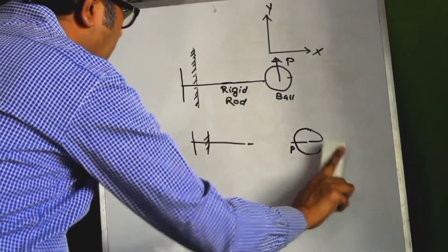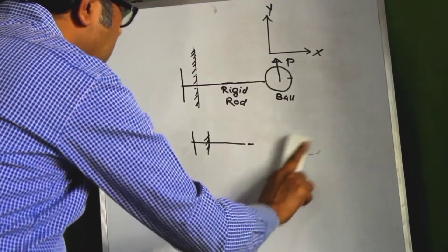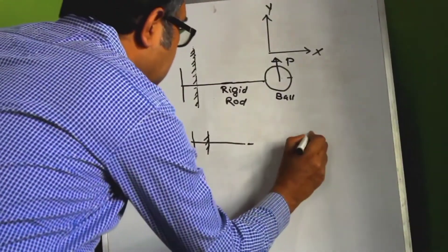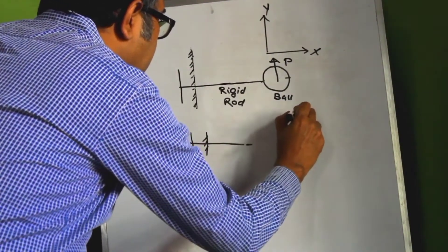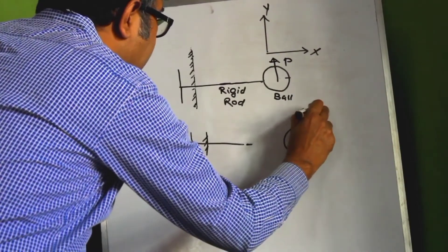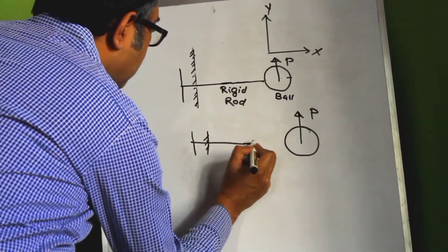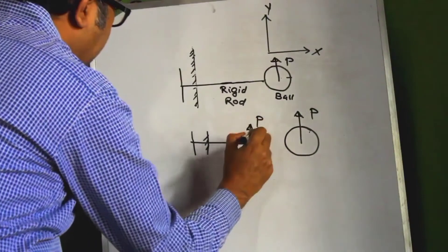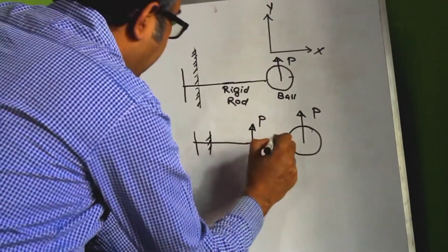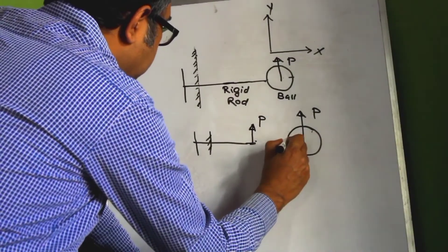So now we are pulling this ball in the vertical direction P. The ball in turn could pull this rod in this vertical direction P and the rod could apply an equal and opposite force to this ball.